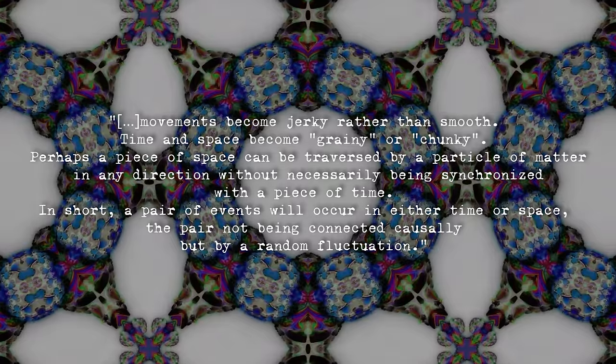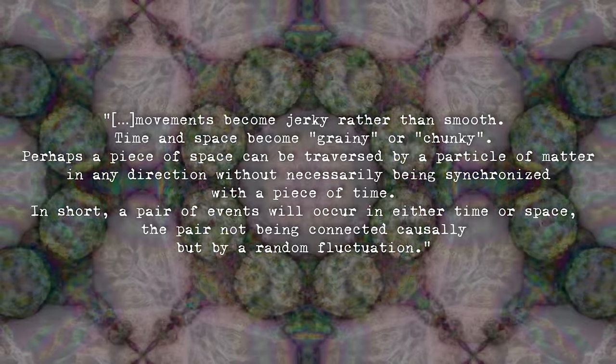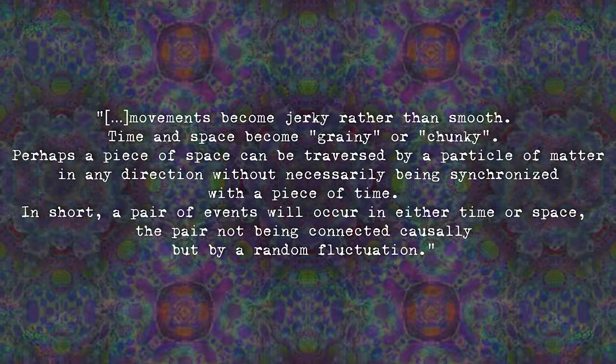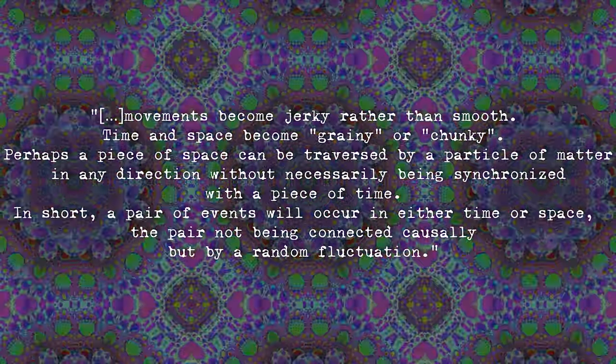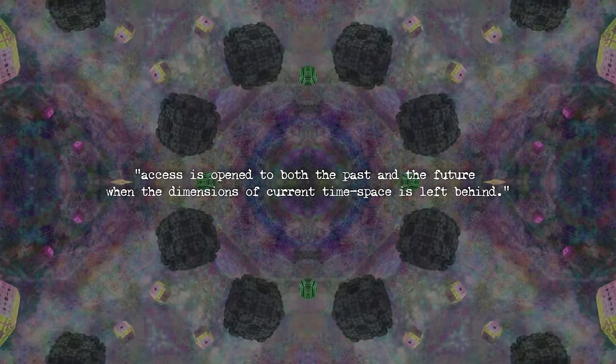Going back to what we will actually find in these intermediate dimensions, it gets weird. Causality and proportionality between events in time and space breaks down and fluctuates. Movements become jerky rather than smooth. Time and space become grainy or chunky. In short, a pair of events will occur in either time or space, the pair not being connected causally but by a random fluctuation. The text skips over this rather important part but leaves us with one side note. Access is open to both the past and the future.